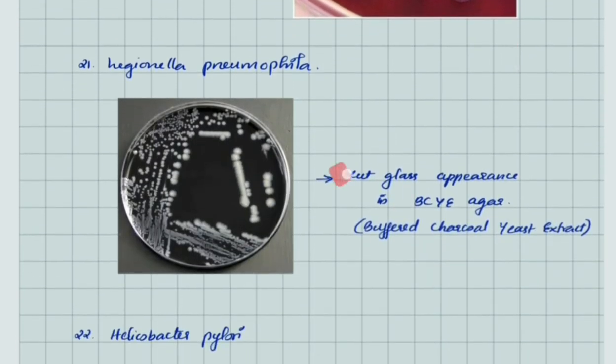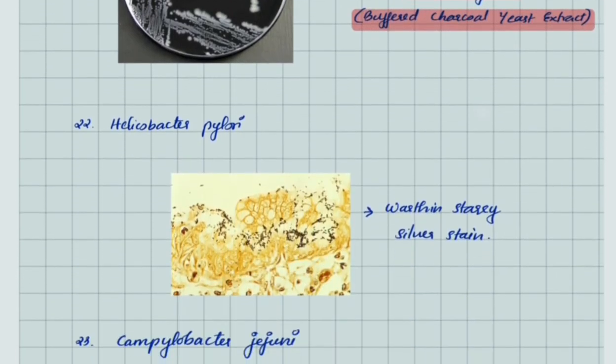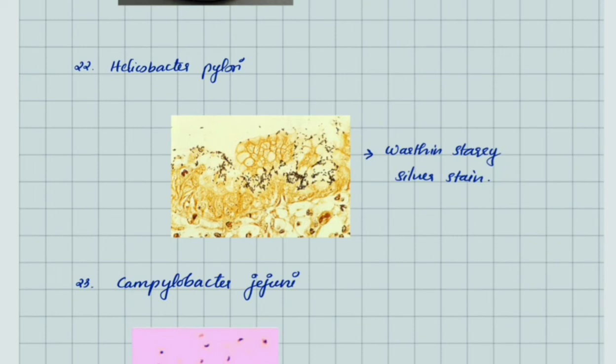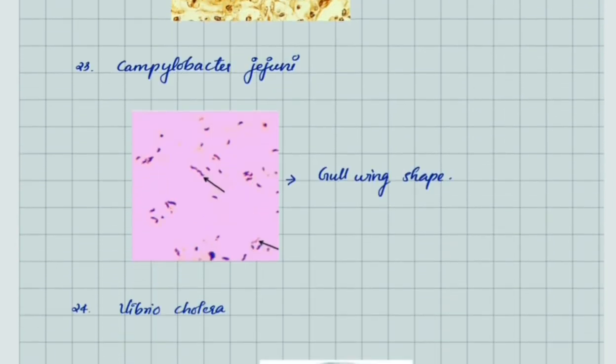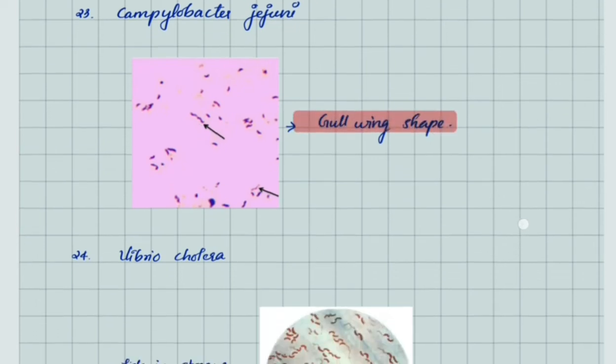Legionella pneumophila shows cut glass appearance in BCYE agar. BCYE stands for buffered charcoal yeast extract. Helicobacter pylori under Warthin-Starry silver stain gives black appearance. This image shows the gull wing shape of Campylobacter jejuni.